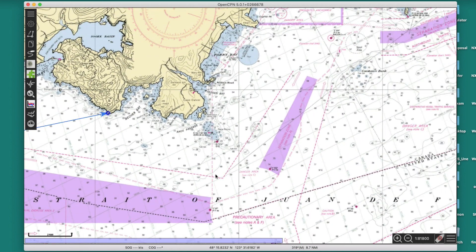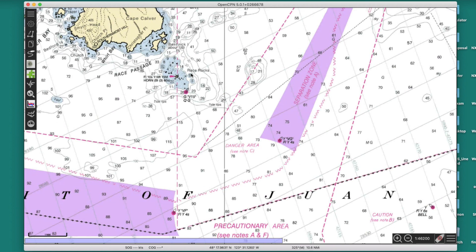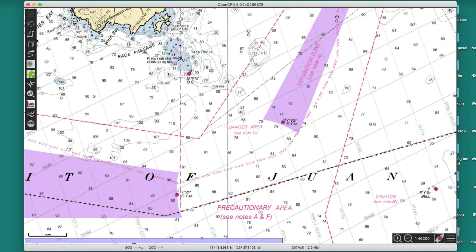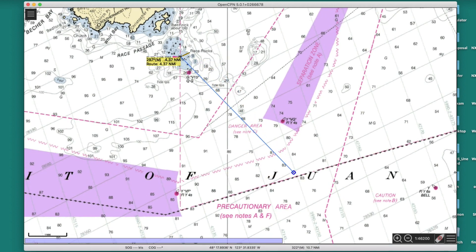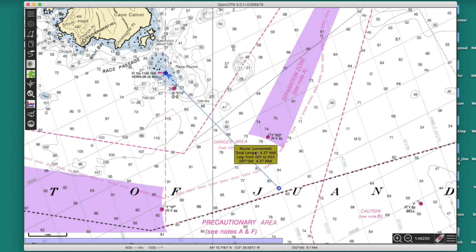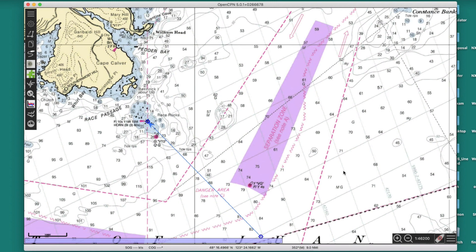Now let's look at how you might do a running fix. Let's say I've got a bearing to this light here — I could do a bearing. That light was bearing 297M, so I plot that. That's at a given time — I could write on here 1205 or a certain log reading. Somewhere at 1205, I was somewhere on that line. I don't know where exactly.